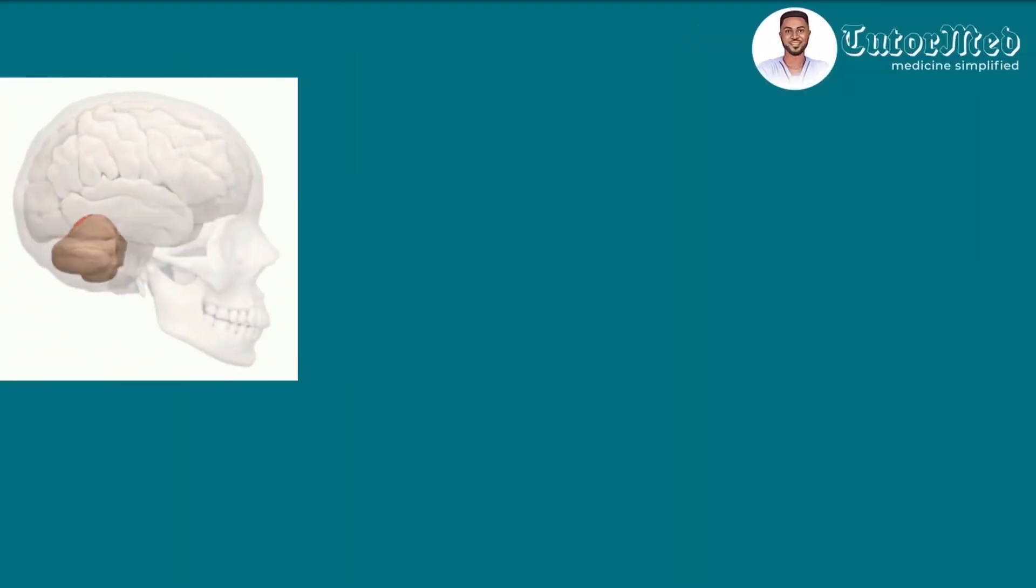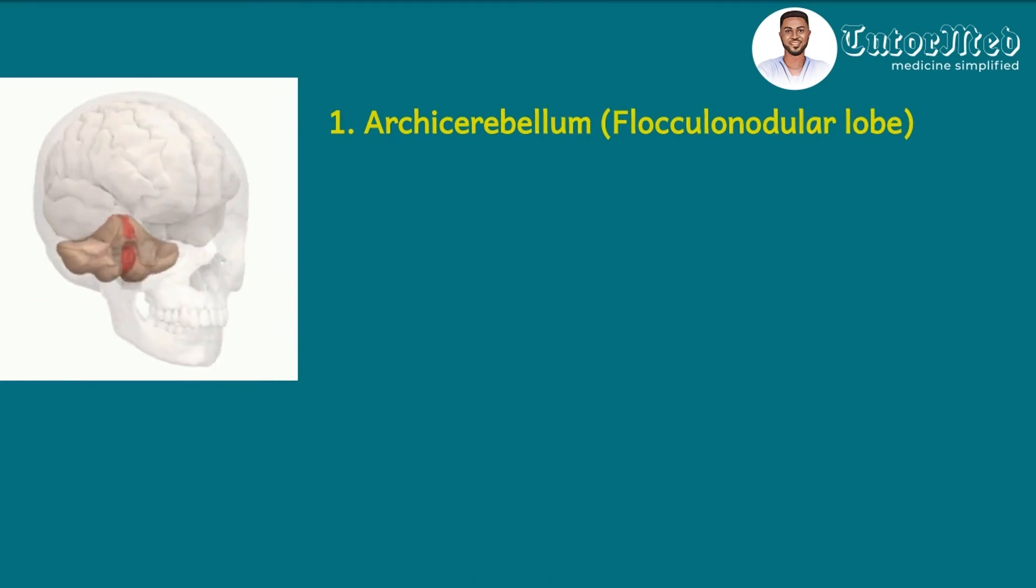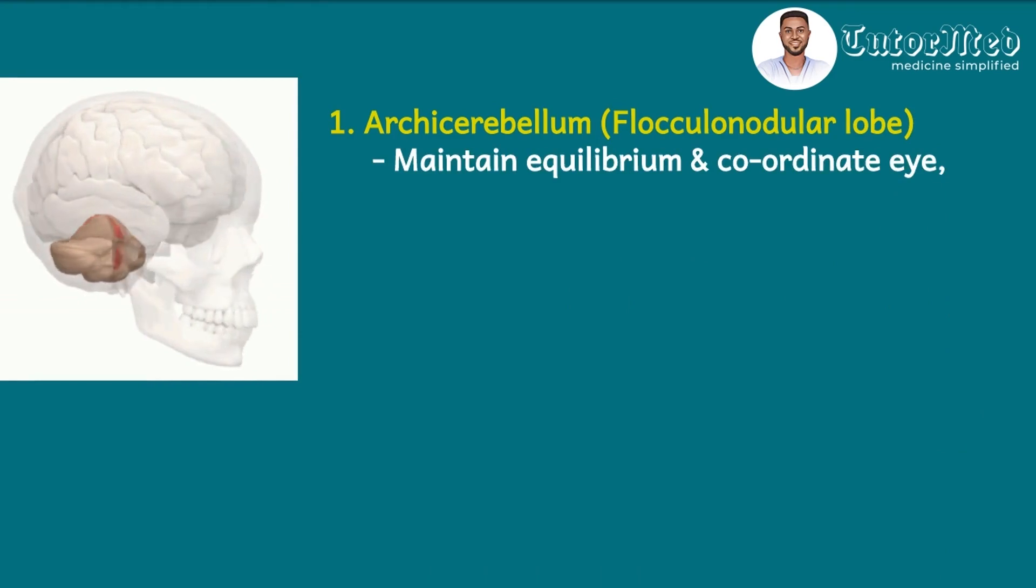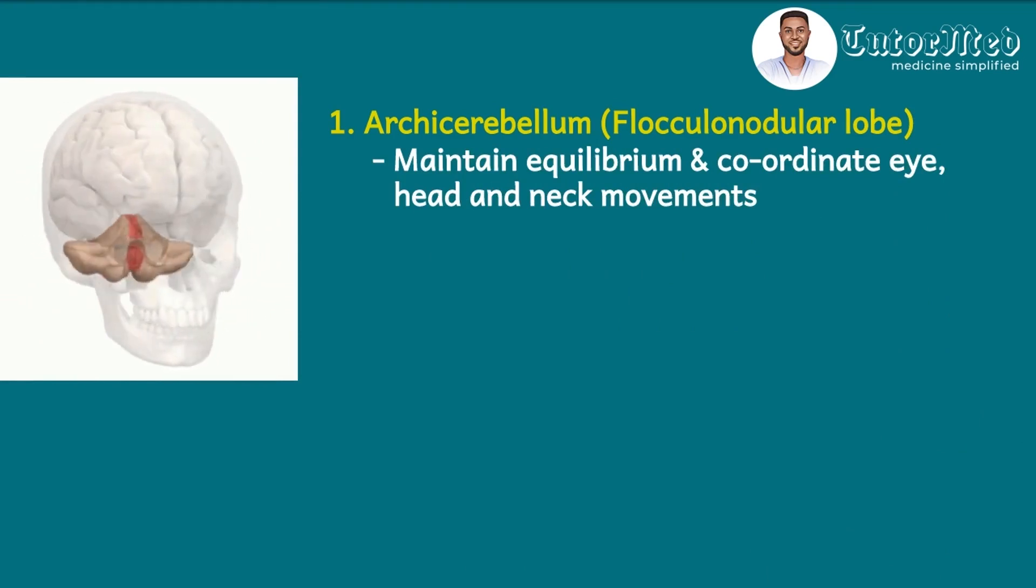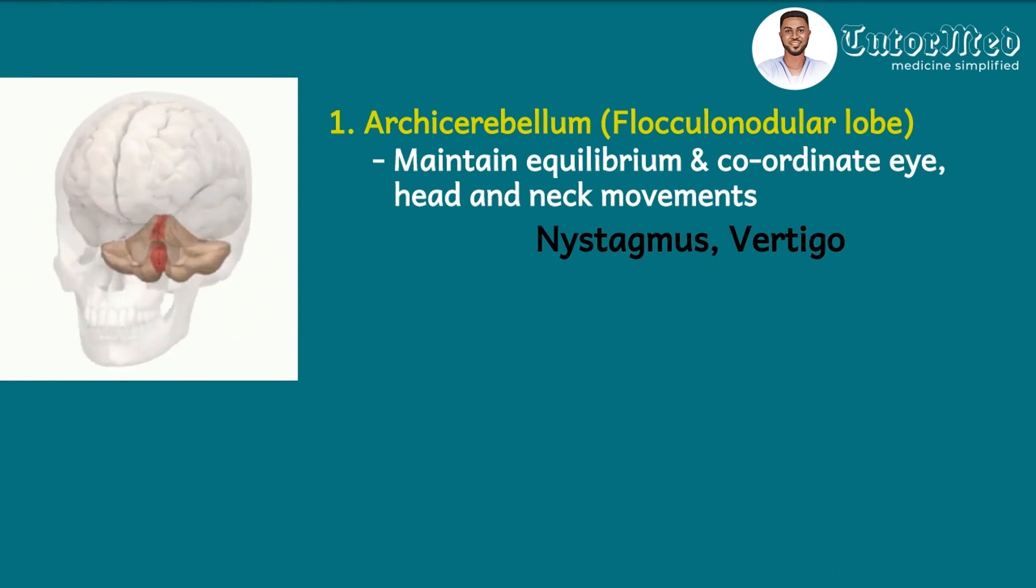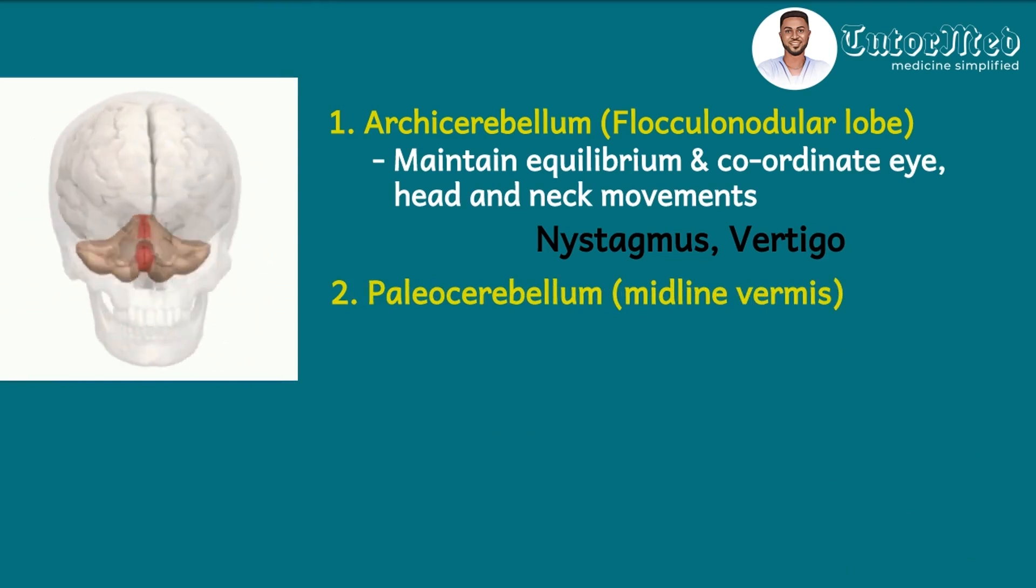So on this slide we want to look at the various functions of the parts of the cerebellum we labeled. Although the question didn't ask us about function, again because we are learning, we need to know that we need to go past what the question is looking for. So the first part is the archicerebellum. Archi means old, so the old cerebellum is made up of the flocculonodular lobe, and this maintains equilibrium and coordinates eye movement, neck and head movements. A lesion in this part of the cerebellum will produce nystagmus because it coordinates eye movement, and then vertigo because it maintains equilibrium.